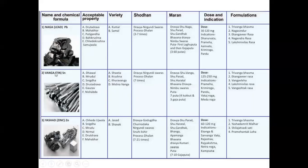Naga has two types, Vanga has four types, and Yashada has two types — remember: two, four, two for Naga, Vanga, Yashada. For the Shodhana — purification — of Vanga, the Dravya used is Nirgundi Swarasa and the process is seven times Dhalana. We will cover Dhalana and Marana in more detail in another lecture.